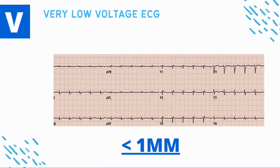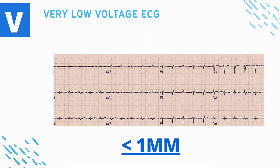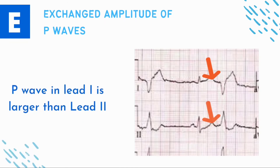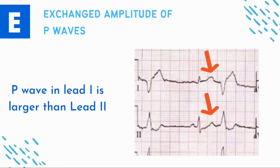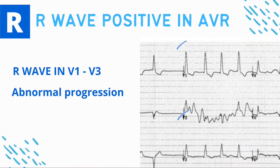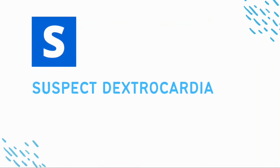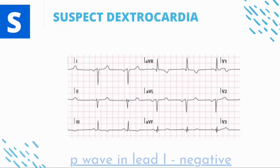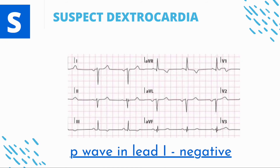E — Exchanged amplitude of P waves: the P wave in lead I is larger than in lead II, seen when the right arm and left arm leads are misplaced. R — Abnormal progression of the R wave in the precordial leads, or precordial lead reversal. S — Suspect dextrocardia: negative P waves in lead I, seen in right arm and left arm misplacement.